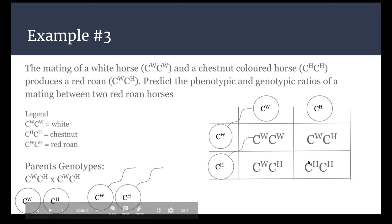So this example I have a different ratio than the other two. I ended up with a 1 to 2 to 1 ratio because I have one white horse, I have two roan horses, and I have one chestnut.